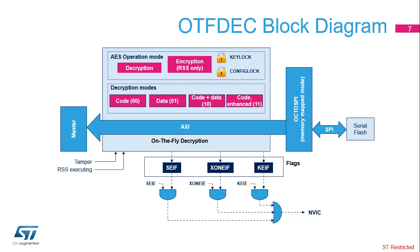In the region configuration register, the mode bits define the OTF-DEC operating mode — standard or enhanced encryption. The RSS can use OTF-DEC for encrypting data using either the standard AES algorithm or the enhanced encryption algorithm. A tamper detection, an RDP regression, or a mode bits change automatically erases the keys. The OTF-DEC can assert an interrupt to the NVIC for three possible causes: security error, key error, and execute-only or execute-while-encryption error.